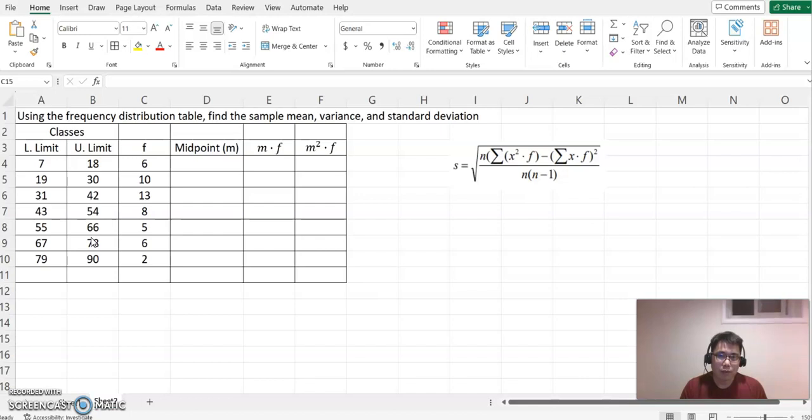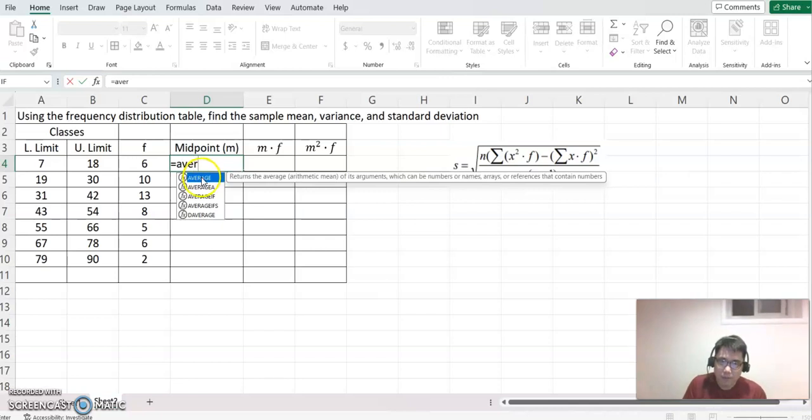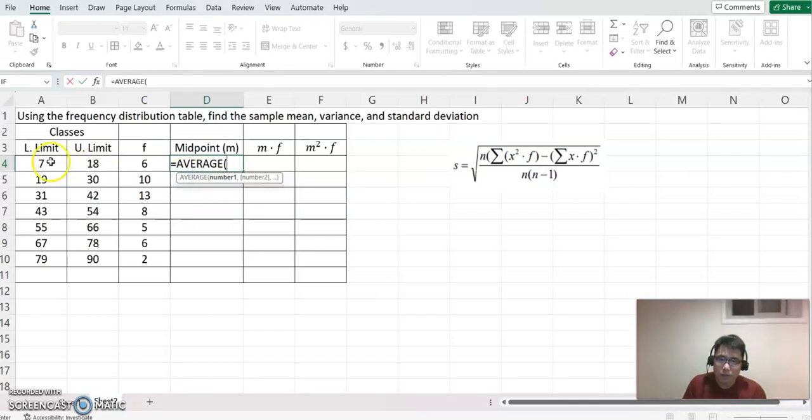We need to find out the representing data, so that's the reason we are finding the midpoint. Remember how to find the midpoint? The midpoint means the average between the lower limit and the upper limit. So equal to average, and select these two, then it will calculate for you.